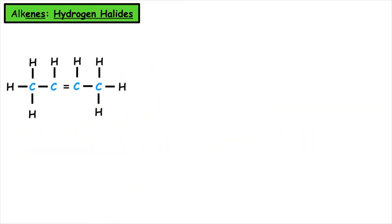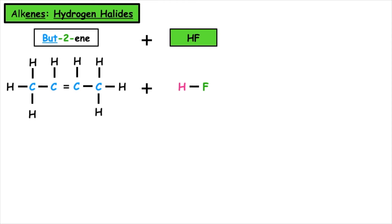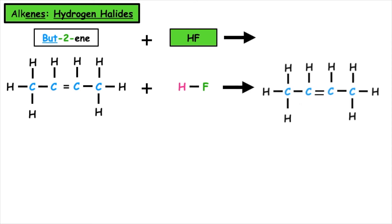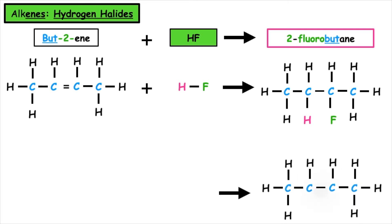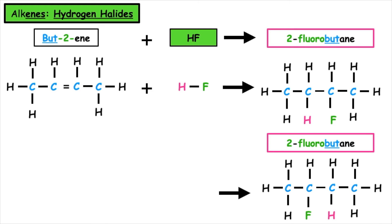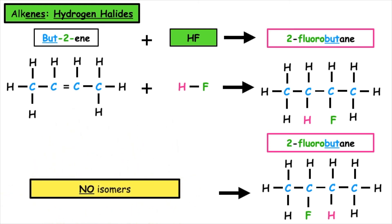If we were to change the position of the carbon-to-carbon double bond and use bute-2-ene and add on hydrogen fluoride, a hydrogen would add on to one of the carbons and a fluorine would add on to the other. The name of this would be 2-fluorobutane. If we swap them round, we're only looking at the position of the fluorine and we can see that will still be in position 2, so the name would still be 2-fluorobutane. This means that no isomers are formed.